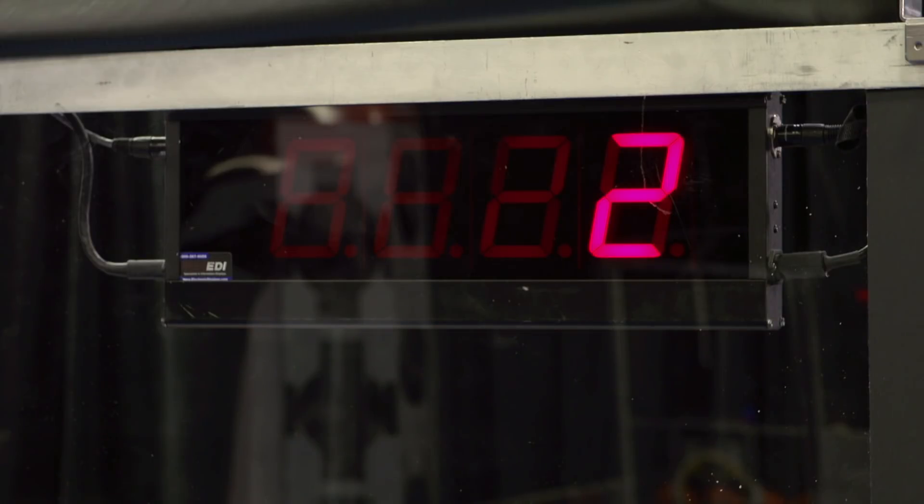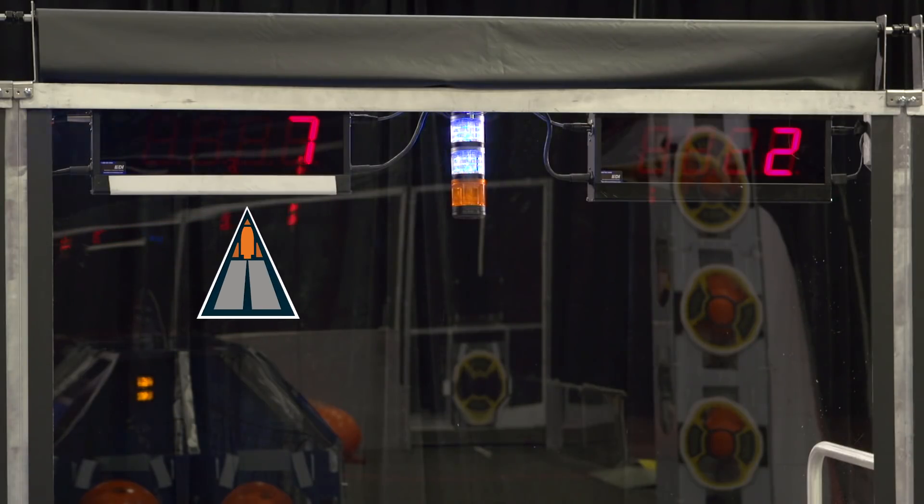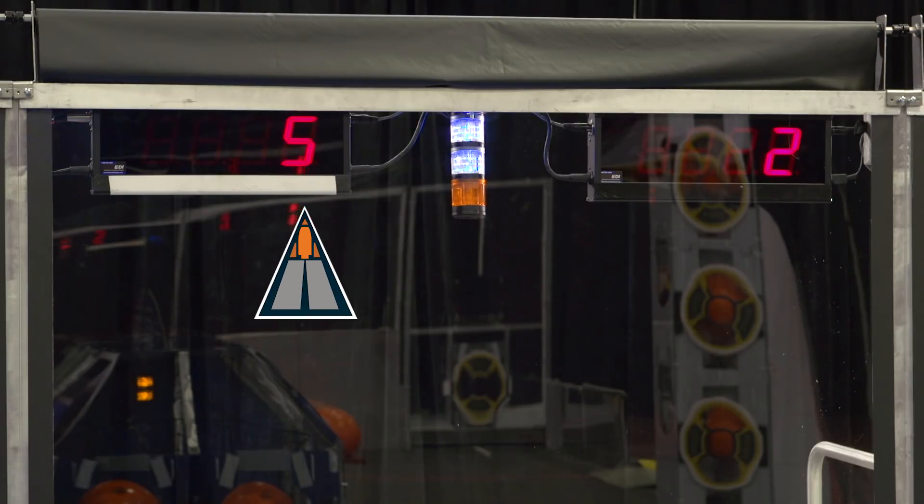Each player station also has a team sign that displays the team number throughout the match. The official time remaining in the match is also displayed on additional signs hung in player station 2, and they are marked with white tape along the bottom edge.